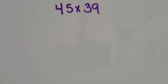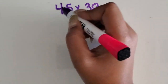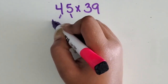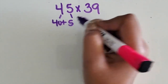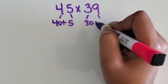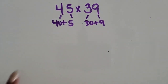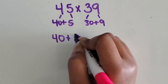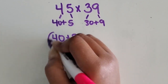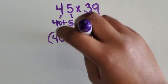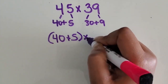The easier way is to use expanded form and decompose them based on their place value. So we would show 45 as 40 plus 5, and 39 as 30 plus 9. Next, you want students to use their parentheses and know that we're multiplying the two amounts.